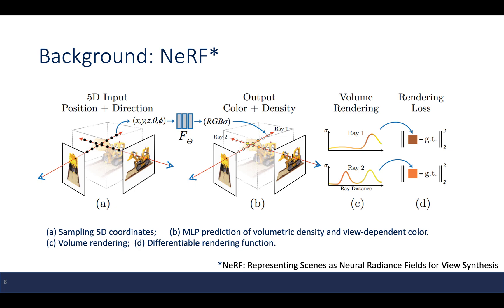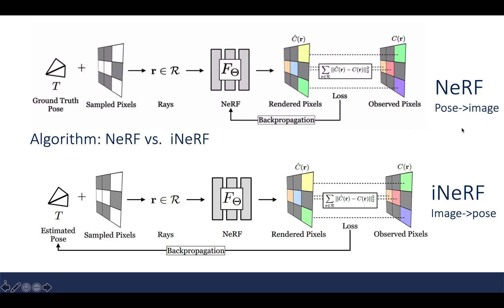The NeRF model works by sampling 5D coordinates; positional-encoded inputs are fed into an MLP which predicts volumetric density and view-dependent colors. The traditional volume rendering method is used to generate the rendered image, which is compared with the ground truth to update the MLP weights. NeRF renders images from known ground truth poses, whereas iNeRF tries to estimate the pose from images.